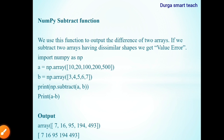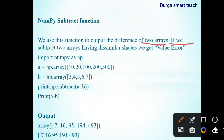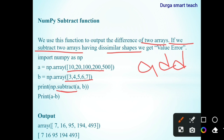The next one is NumPy subtract function. The subtract function is used to find the difference of two arrays. If you subtract two arrays having dissimilar shapes, you get an error. You need to remember that both arrays must have the same dimensions and structure. You can use np.subtract(A, B), or you can find the difference using the minus operator: print A minus B. In both cases you will get the same type of output.